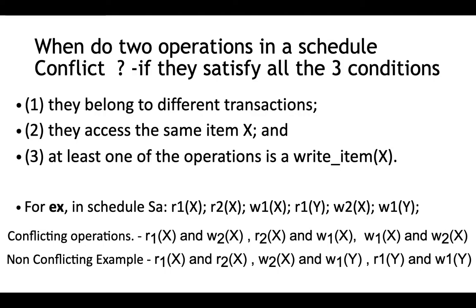When do two operations in a schedule conflict? Three conditions must be satisfied. First, they should belong to different transactions. Second, they should be accessing the same data item. Third, at least one of the operations should be a write. If all three conditions are satisfied, the two operations are said to be conflicting.